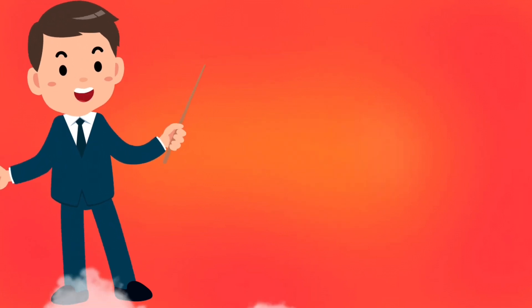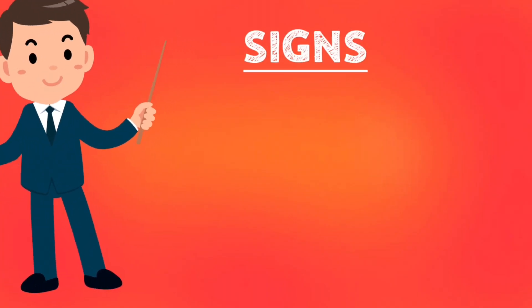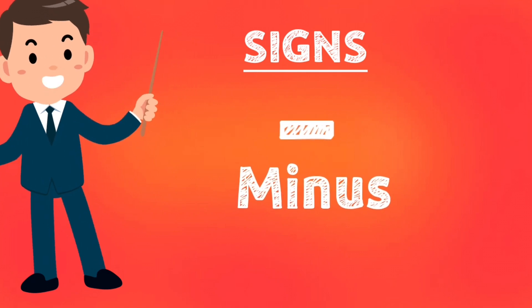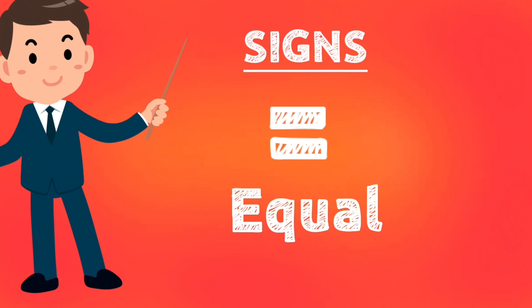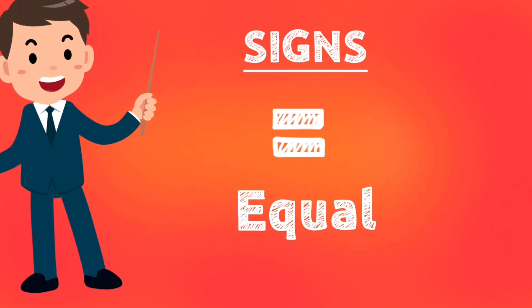Signs used in subtraction: The most important sign is minus. It is a symbol that indicates to subtract. The next sign is equal. The equal sign is placed to show the result of the counting.